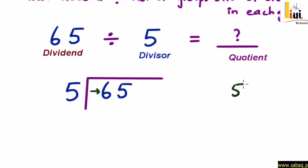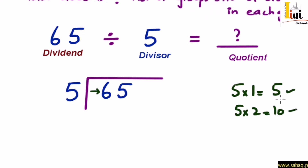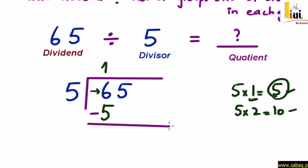अब divide कैसे करते हैं? Dividend को left side से देखना शुरू करते हैं — left side पे पहले है 6। उस 5 को ignore कर देंगे और 6 को बाहर वाले 5 से divide करेंगे। देखते हैं कि 5 की table में 6 आता है या नहीं: 5×1=5, 5×2=10। तो 6, 5 और 10 के दर्मियान में आता है। 6, 5 की table में नहीं आ रहा, तो हमने 6 से छोटे वाले number का digit उठाना है यानि 5×1=5। क्योंकि 10 रखते तो 6 में से minus नहीं होता। तो 6 minus 5 = 1। अब अगले digit 5 को नीचे लेकर आना है, जो 1 के साथ मिलकर 15 बन जाएगा।